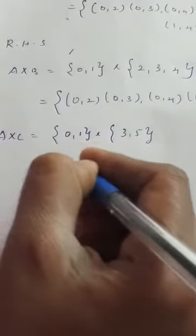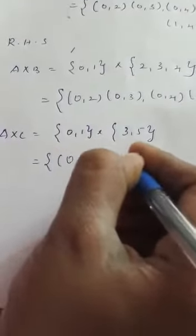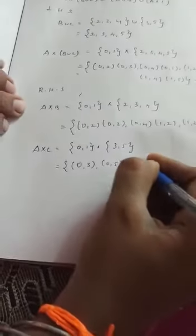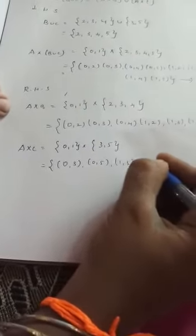Next you have to find A cross C. So set A is 0, 1, C is 3, 5. Write it as ordered pairs: (0,3), (0,5), (1,3), (1,5).